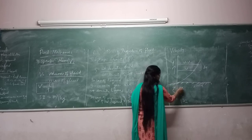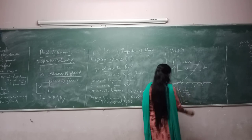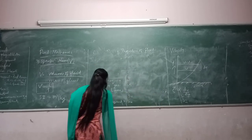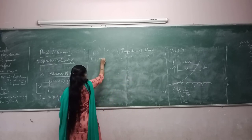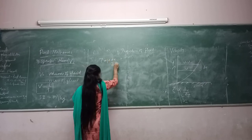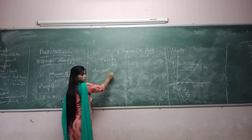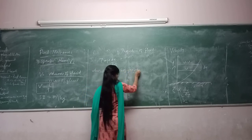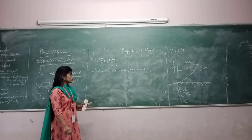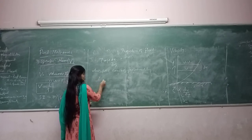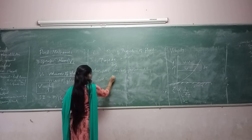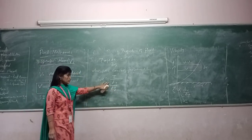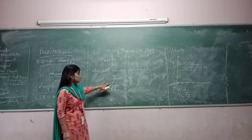This shear stress is directly proportional to the rate of shear strain, that is du divided by dy. This is also known as dynamic viscosity, represented by mu. Dynamic viscosity is defined as the shear stress required to produce unit shear strain, that is tau divided by du/dy equals mu.